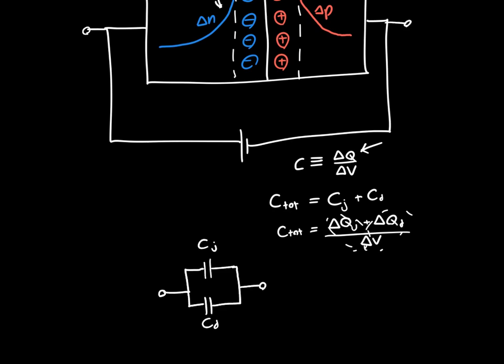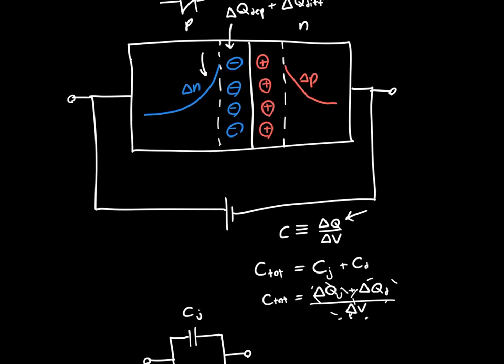The only thing left is the resistance, Rd, the diffusion resistance. And remember, Rd is due to the change in current. So it's due to the change in current over the change in voltage, or rather the inverse of that.